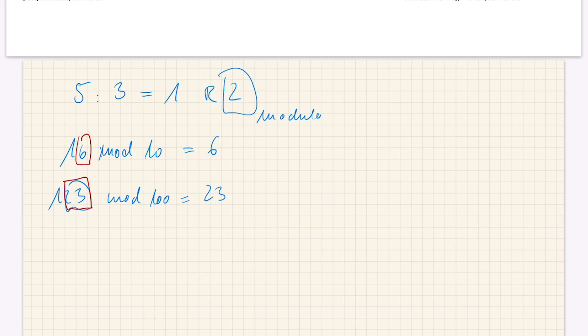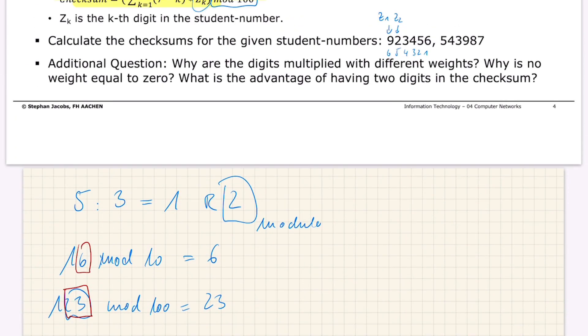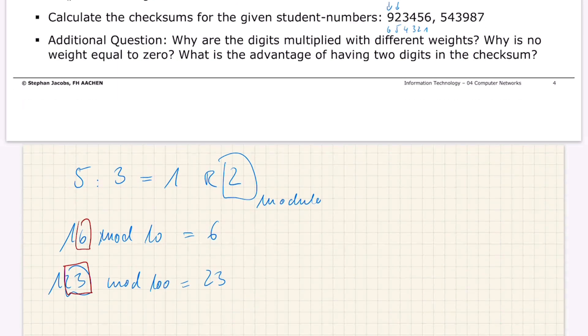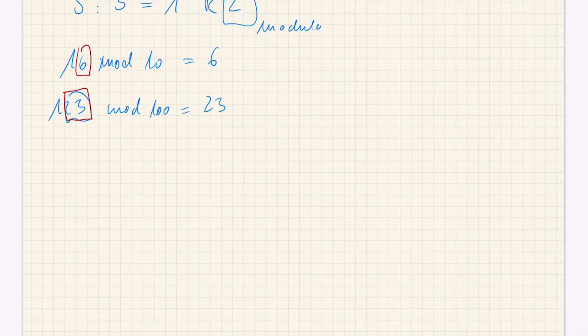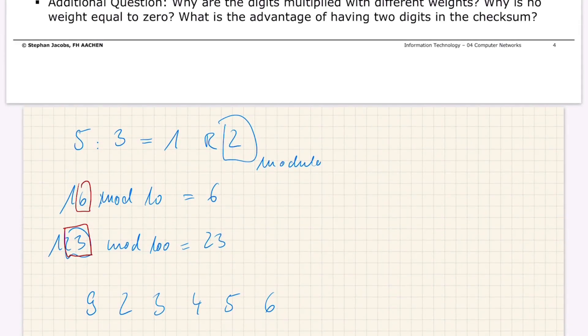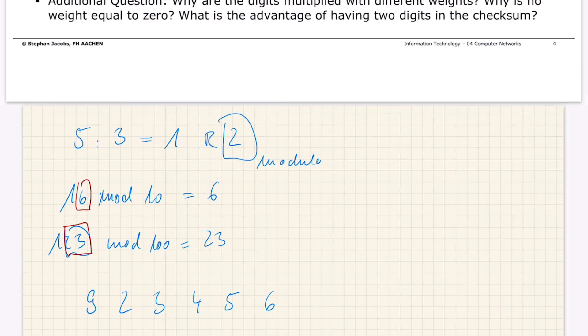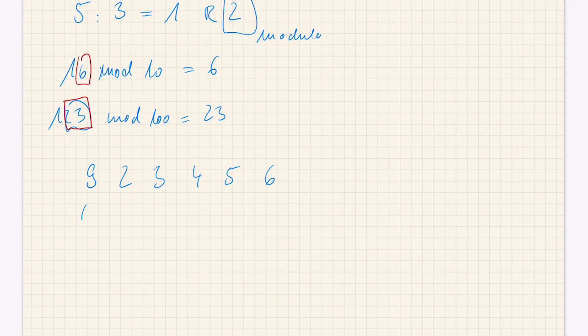Let's have a look at our example. So we have this number 923456. And we have our weights 6, 5, 4, 3, 2, 1. And now we can simply do the calculations.